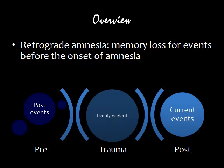As an aside, it's worth noting that some forms of memory problems don't have a traumatic event or incident that occurs. For example, Alzheimer's disease does not have a traumatic event that precipitates amnesia. However, even in Alzheimer's, a person might be better able to recall current events than past events, or vice versa, and so understanding the difference between retrograde and anterograde amnesia is important.